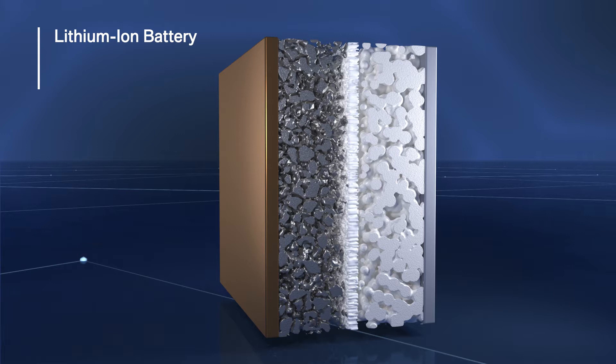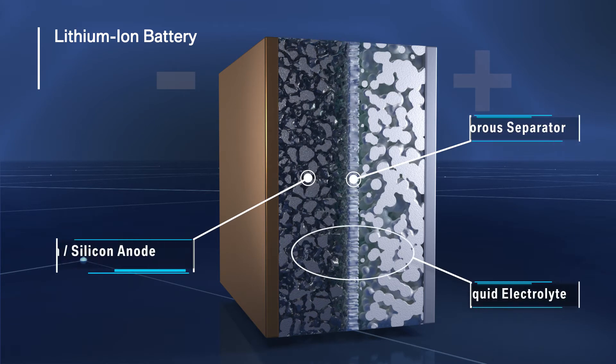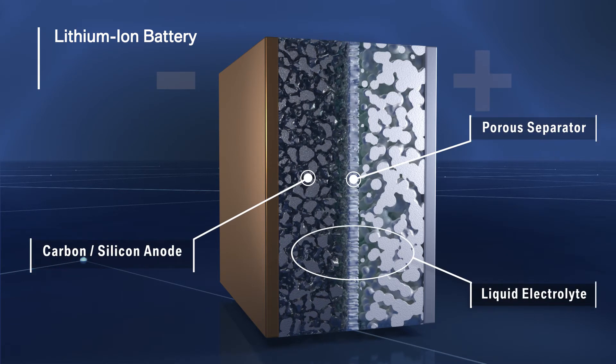Today's batteries are based on lithium-ion technology composed of two electrodes: cathode, anode, and a porous separator. A liquid electrolyte allows the lithium-ion transfer and thus the flow of current.